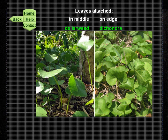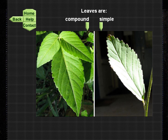Running through a few more choices in this dichotomous key: look at the leaf on the left — it is subdivided into three leaflets; we call this compound. The leaf on the right is not subdivided and is attached directly to the stem; this is simple.